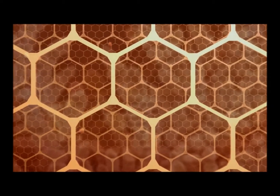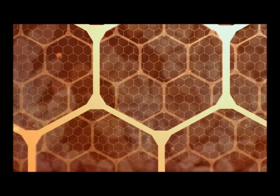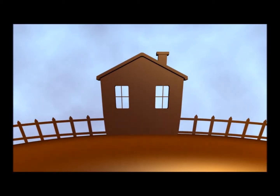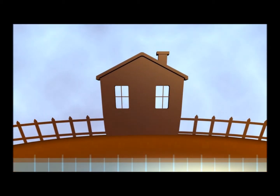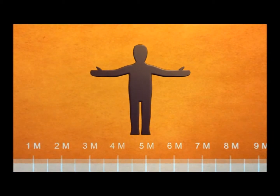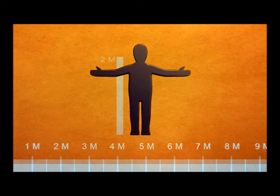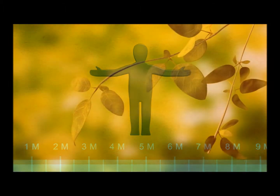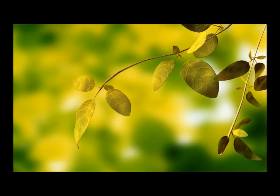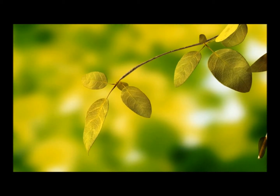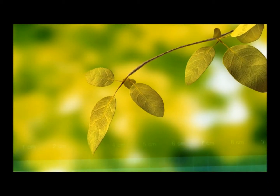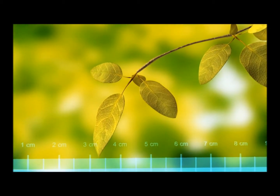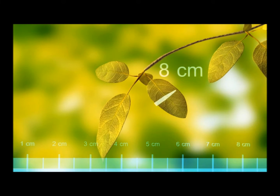Keep an eye on the ruler at the bottom of the screen as you zoom in. Up here, where you live, we measure things in meters. The average grown-up is a little less than two meters tall. Here, we measure things in centimeters. The leaf you're looking at is eight centimeters wide.